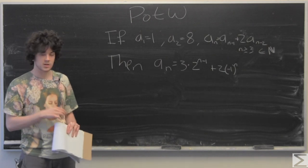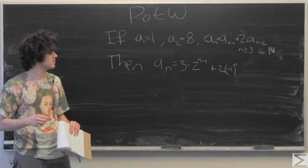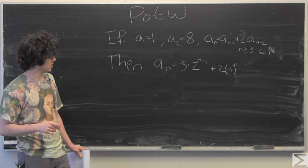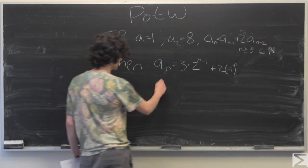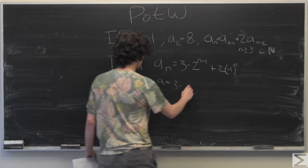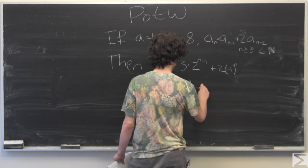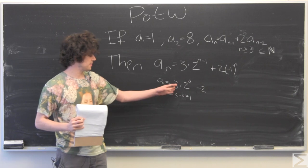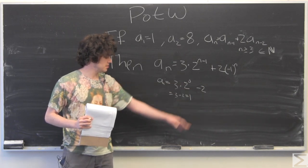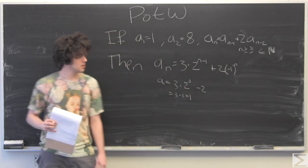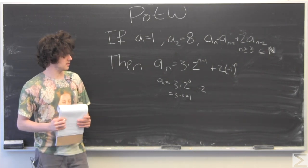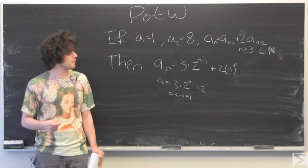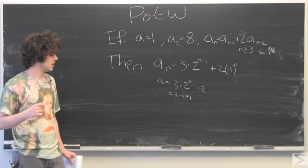So we're just going to go ahead into proving the base case. So according to this, we just have 3 times 1 minus 2, because this is going to be negative 1, and so that's 1.